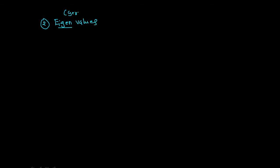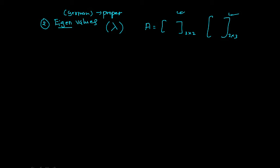Now let's move on directly to the second point — eigenvalues. This 'eigen' word is derived from German, which means 'proper values.' You have one square matrix, let's say A. From an examination point of view, you will get one 2×2 matrix or one 3×3 matrix. We are trying to find the value of lambda — that is, find the eigenvalues of this matrix.